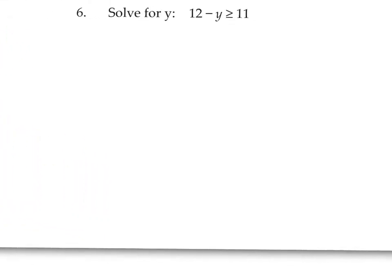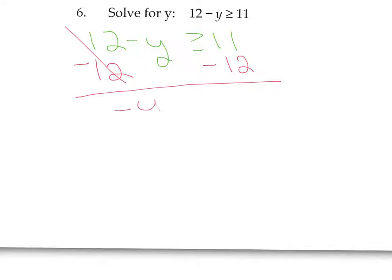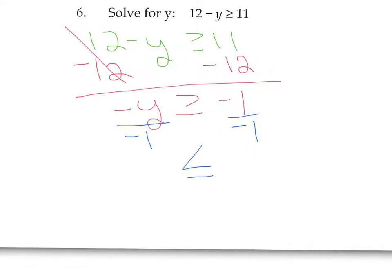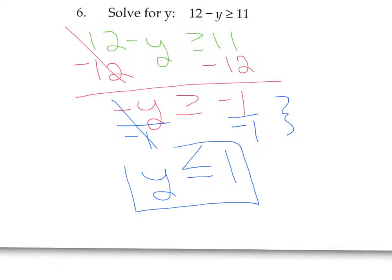On number 6, we rewrite: 12 minus y is greater than or equal to 11. To isolate y, first subtract 12. So we have negative y is greater than or equal to negative 1. Now we have to get rid of the negative on the y, so we divide by negative 1. When you divide by a negative, you have to flip the direction of the symbol. So this becomes less than or equal to, giving us y is less than or equal to positive 1.